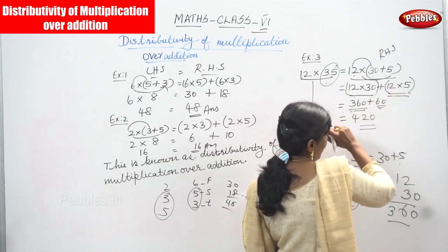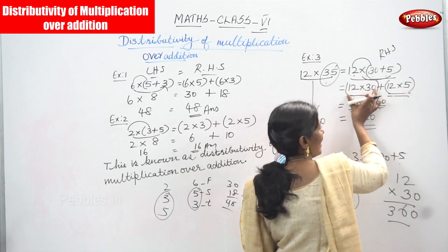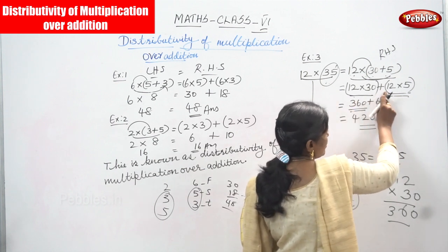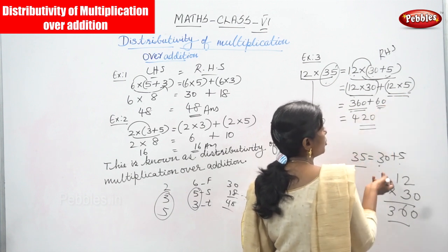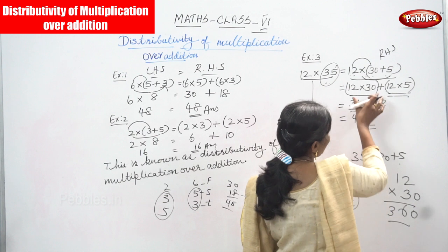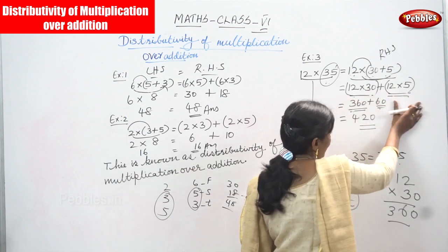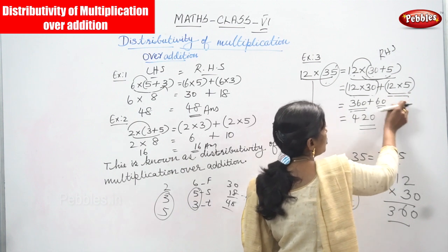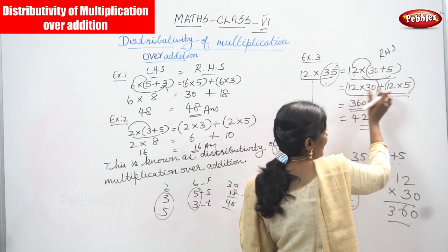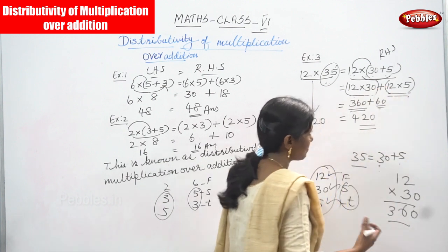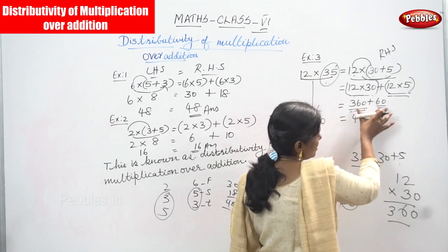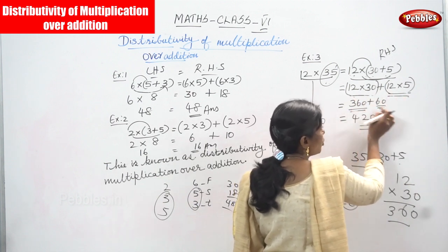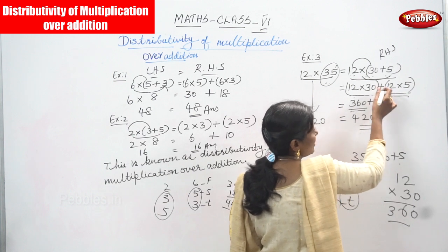Between the two brackets you have an addition sign. So you add the two bracket results together. The first bracket holds the first and second numbers, and the second bracket holds the first and third numbers. Multiply separately inside each bracket, then add those two results together — that is the distributive property of multiplication over addition.